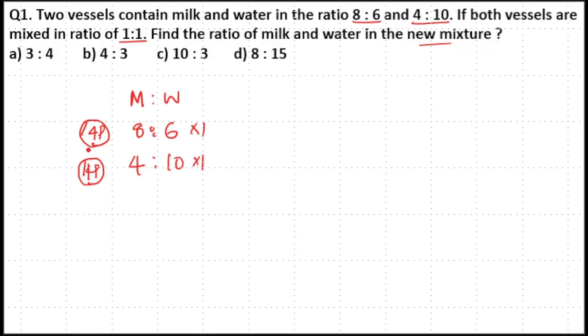Since the parts are equal in both ratios, you can directly add the ratios together to get the new ratio in the third vessel. So 8 plus 4 is equal to 12 parts and 6 plus 10 is equal to 16 parts.